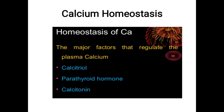You already saw this slide last class — this is homeostasis of calcium. The homeostasis of calcium means maintaining serum or blood calcium level at 9 to 11 milligram per dL. There are many factors involved: calcitriol, parathormone, and calcitonin.